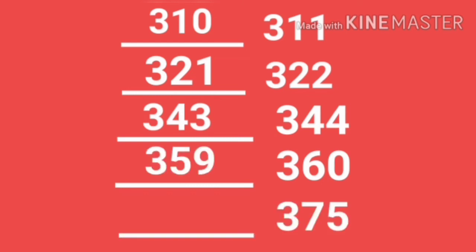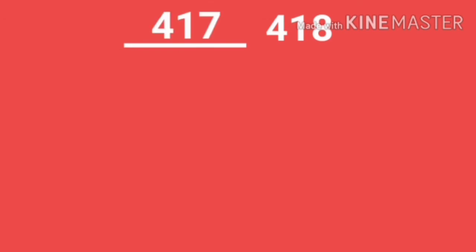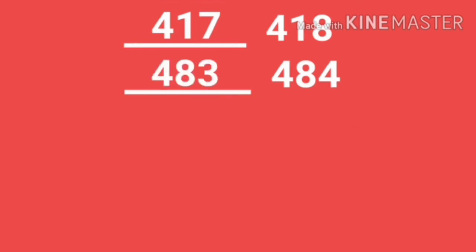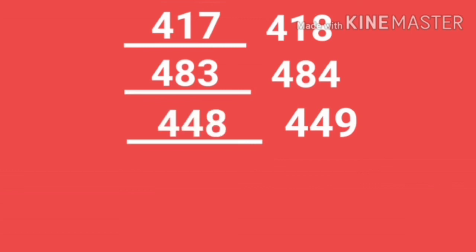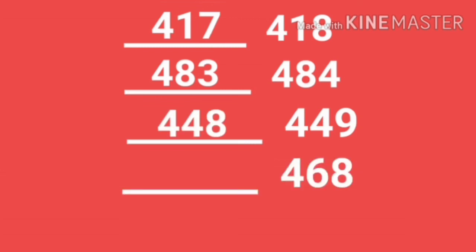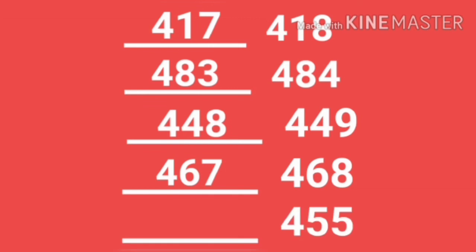The before number for 375 is 374. The before number for 418 is 417. The before number for 484 is 483. The before number for 449 is 448. The before number for 468 is 467. The before number for 455 is 454.